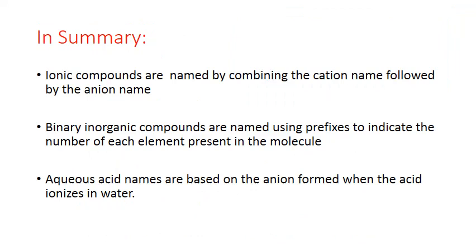In summary, ionic compounds are named by combining the cation name followed by the anion name. Binary inorganic compounds are named using prefixes to indicate the number of each element present in the molecule — it is the only naming system of these three categories that uses prefixes. Aqueous acid names are based on the anion formed when the acid ionizes in water.